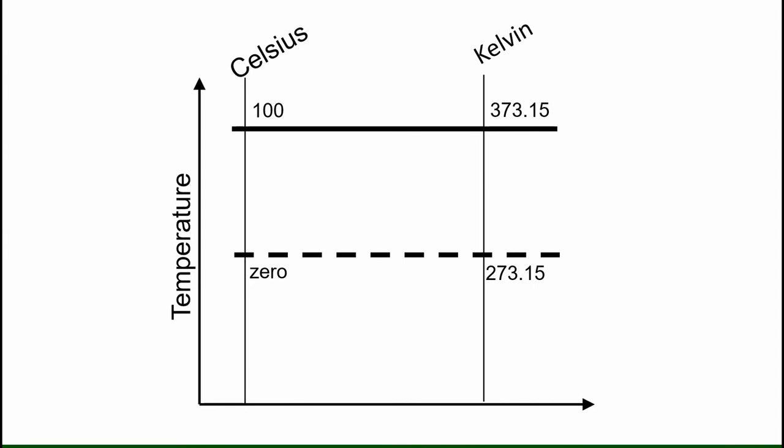If we look at the solid line that is where water starts to boil at 100 degrees Celsius and the corresponding temperature in Kelvin is 373.15. You will see that to convert zero degrees Celsius to Kelvin we add 273.15 to the value.